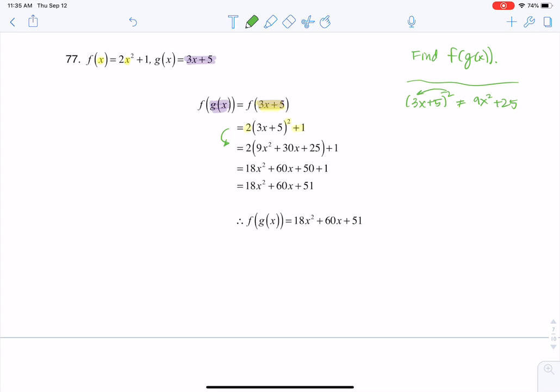Sometimes I get students who want to distribute this exponent into those parentheses, and you can't because you have a binomial. When I say binomial, it's because we have two terms being added. So you're not allowed to distribute exponents over binomials or whenever there's an addition or subtraction sign in the parentheses.